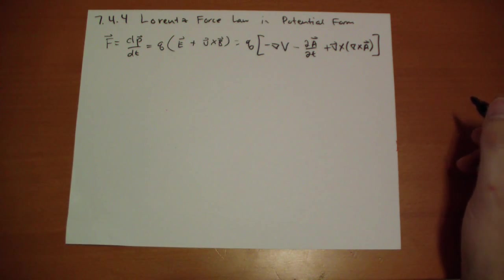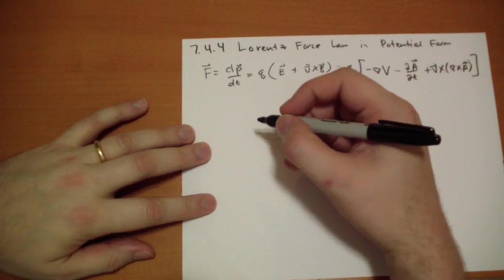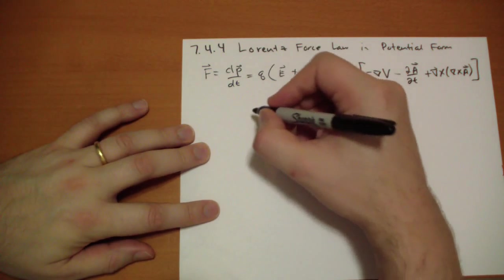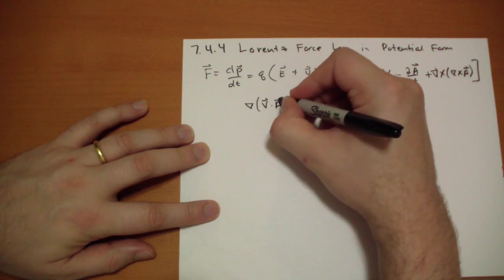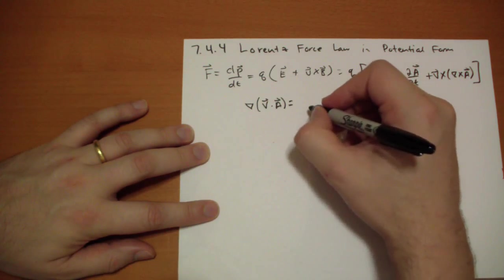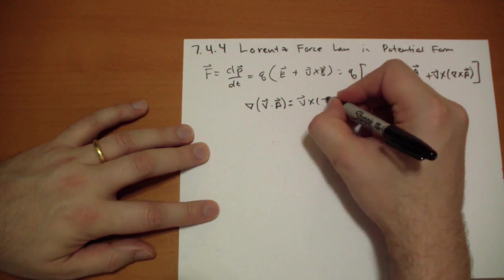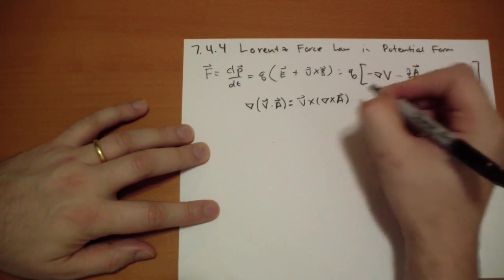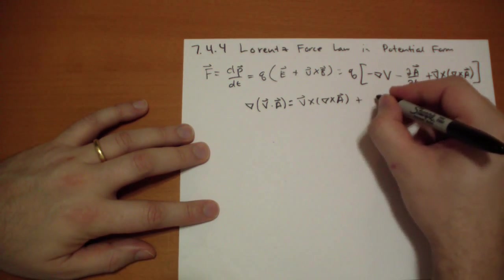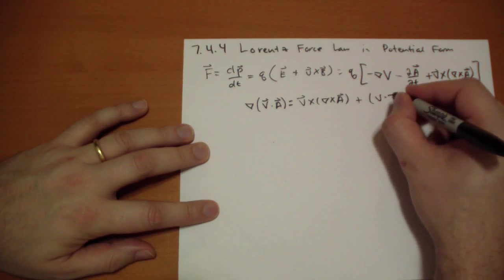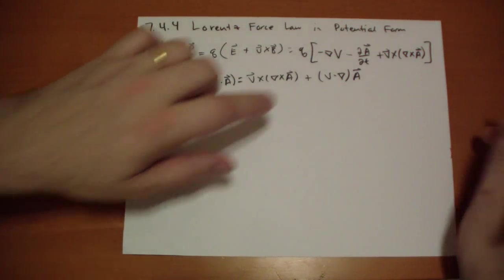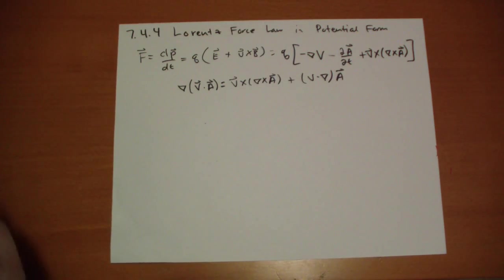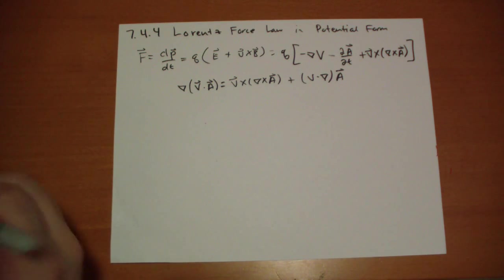We're going to take advantage of product rule number 4, which says that the gradient of the dot product is equal to the first vector cross the curl of the second, plus V dot del A vector. This thing confuses a lot of people, and I'm going to take a few moments to explain what it means.